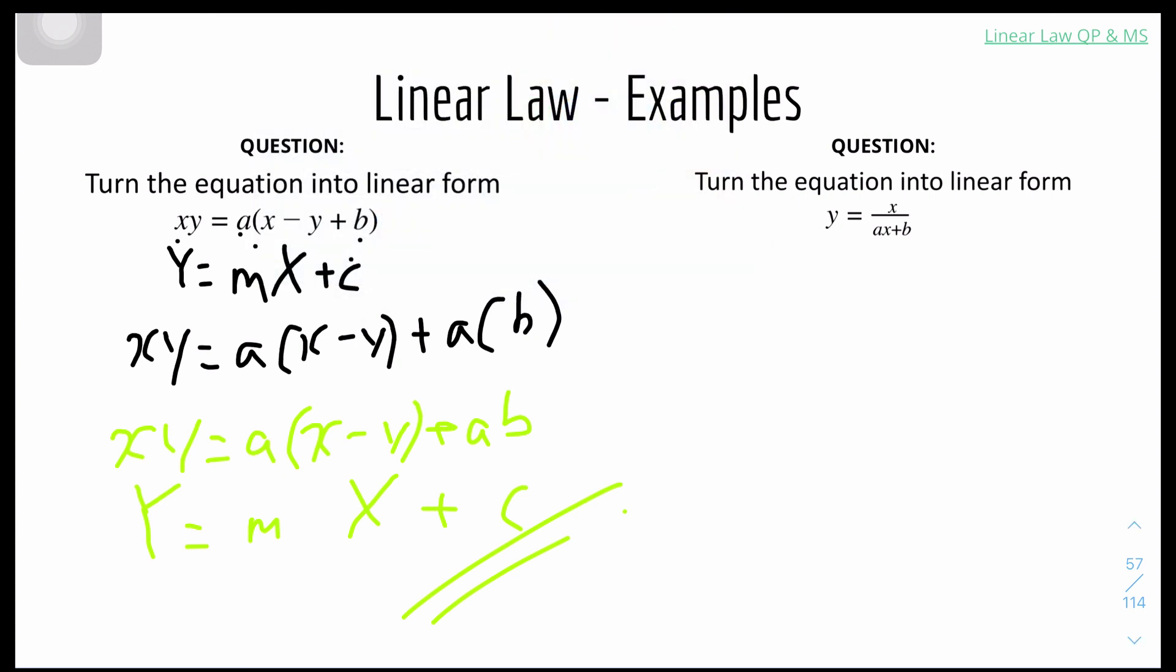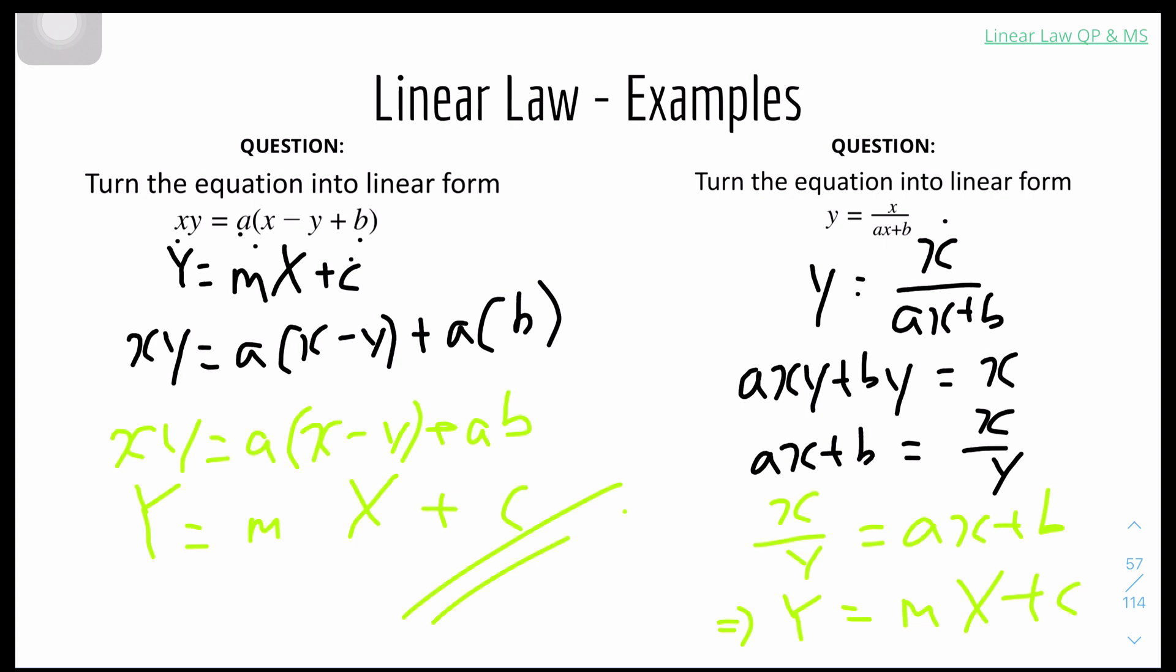Then we have to turn the equation into non-linear. What we can do is divide everything by a. We have x over y equals x plus c. Where big Y is x over y, m is a, big X is x, and c is b. We basically have the answer because if you rearrange this, it will be x over y equals x plus b, where big Y is x over y, m is a, big X is x, and c is b.